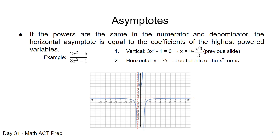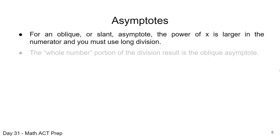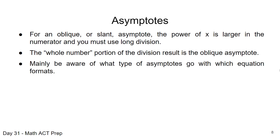Now the third case: the oblique or slant asymptote. In this case, the power of x is larger in the numerator, and you'll need to use long division or synthetic division to find the slant asymptote. When you perform the long division, the whole number portion of the result — not the remainder — is the oblique asymptote. On the ACT, you're rarely asked to calculate the slant asymptote; mainly you need to be aware of which asymptotes an equation has.